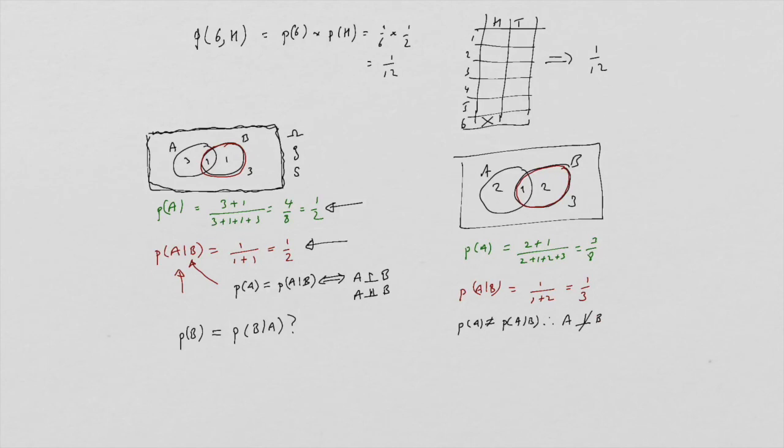Don't worry if this is a bit difficult, because you'll cover conditional probability properly in A2. But this kind of connects independence through to that topic.